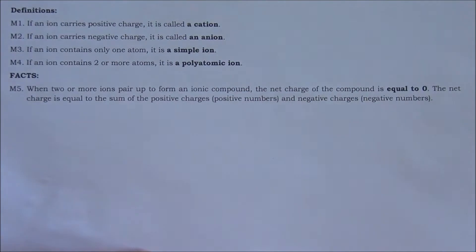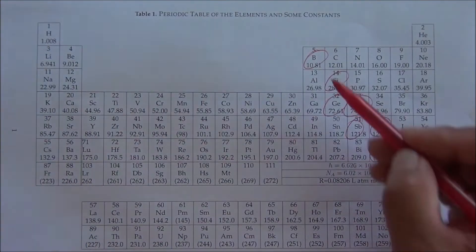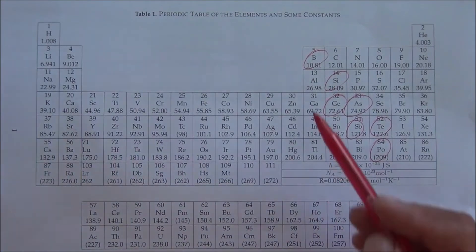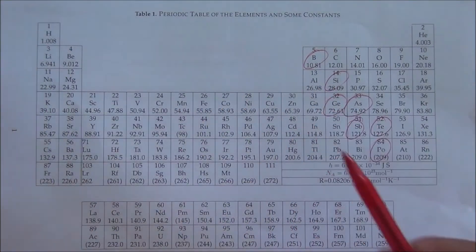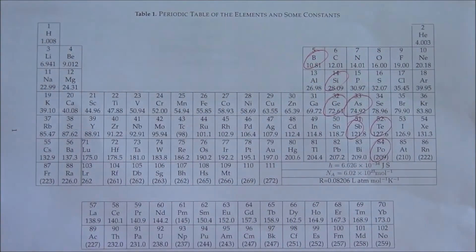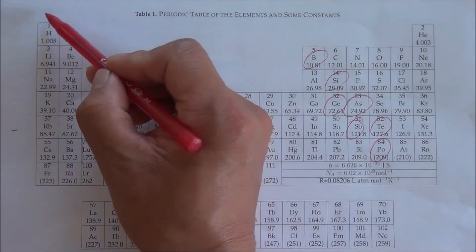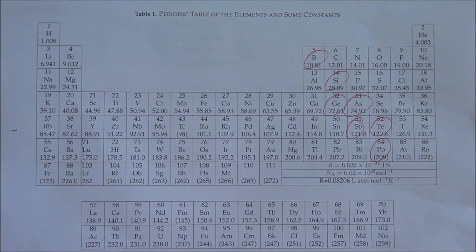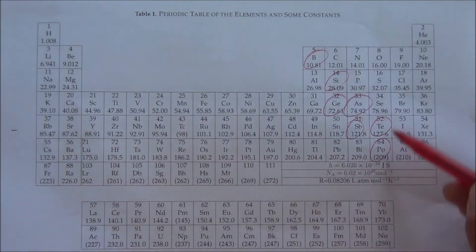Simple ions are formed when a neutral atom gains or loses electrons. Looking at the periodic table, the elements circled are called metalloids, also called semi-metals. Elements on the left side of the metalloids are metals, except hydrogen, which is a non-metal. Elements on the right side of the metalloids are non-metals.